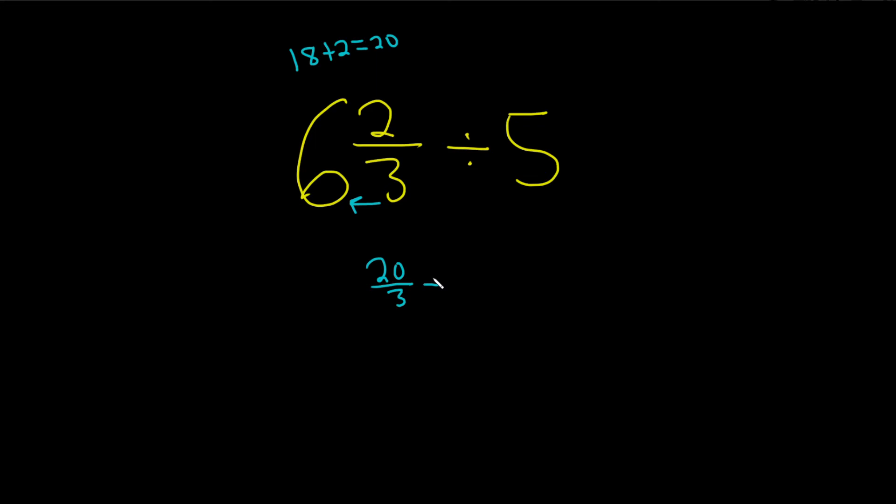That's divided by, well, we want to write 5 as a fraction. So whenever you have a whole number and you want to write it as a fraction, you can just divide it by 1. This is 5 over 1.